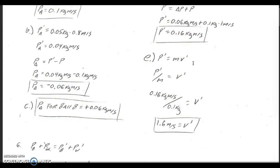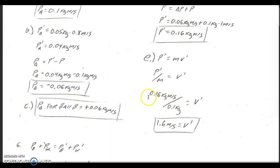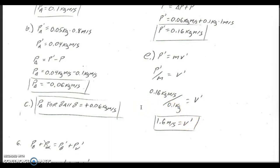Finally, for part E, what is ball B's speed after the collision? Momentum equals mass times velocity. We're solving for the velocity after the collision, so we divide by the mass. The momentum after the collision is 0.16 kilogram meters per second and the mass is always 0.1 kilograms, giving a speed of 1.6 meters per second after the collision for ball B.